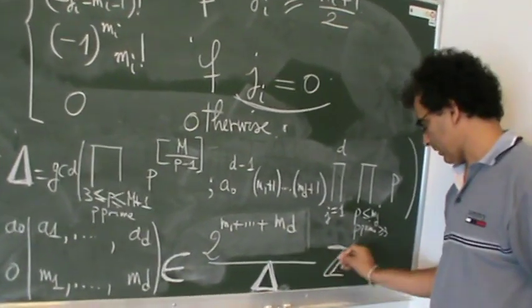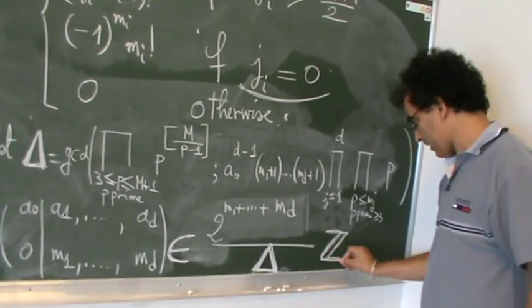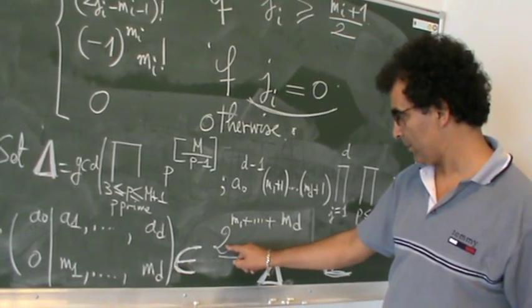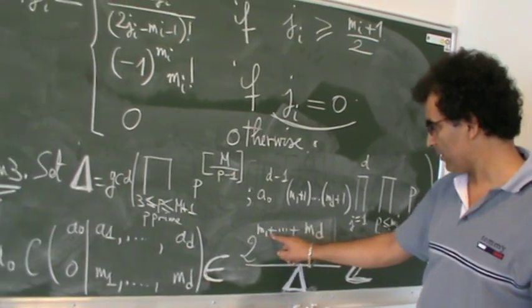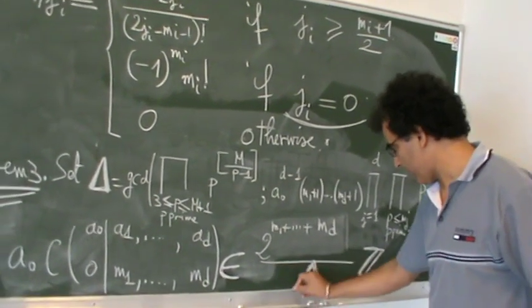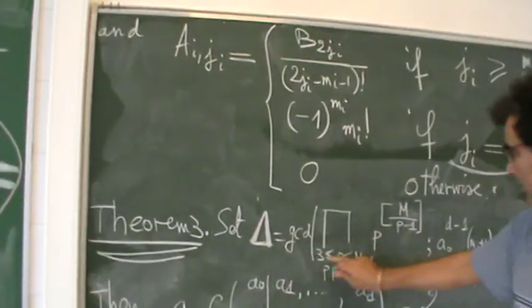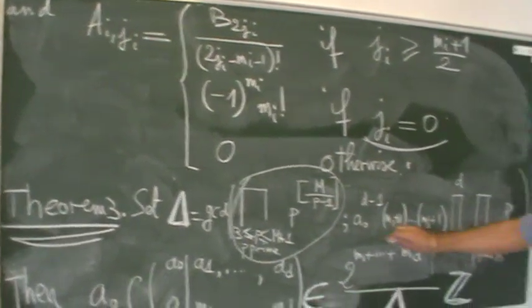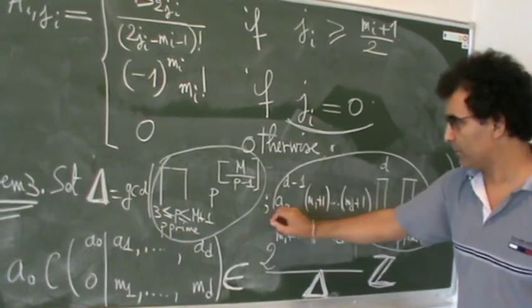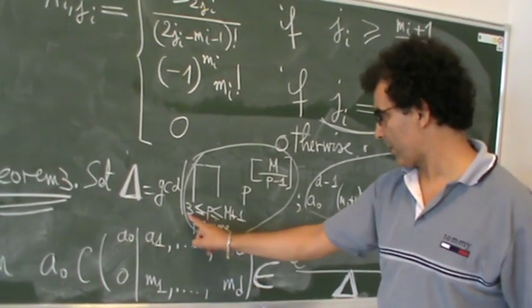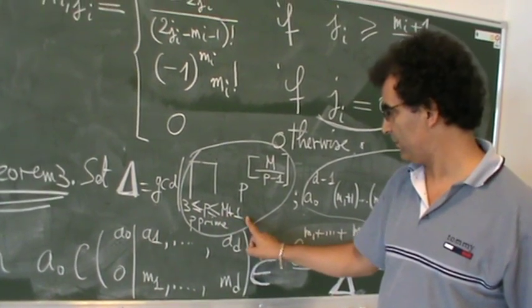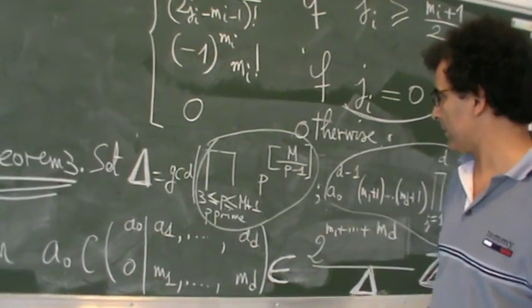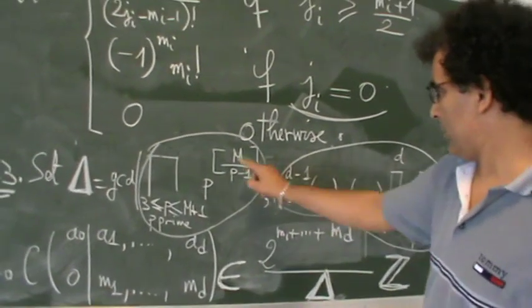This sum is exactly a rational — it is an integer multiplied by a factor involving 2 to the power M1 plus MD over delta, where delta is given by the GCD of two products. The first product is over all primes between 3 and M plus 1, raised to the power capital M over P minus 1, and this is the integer part.